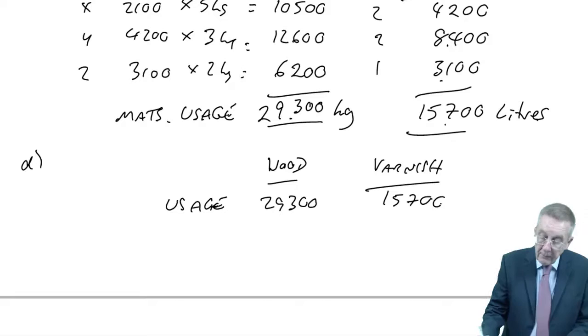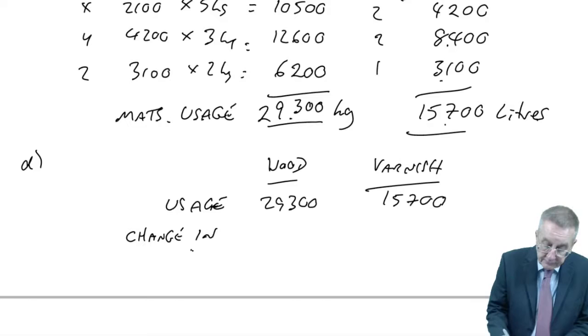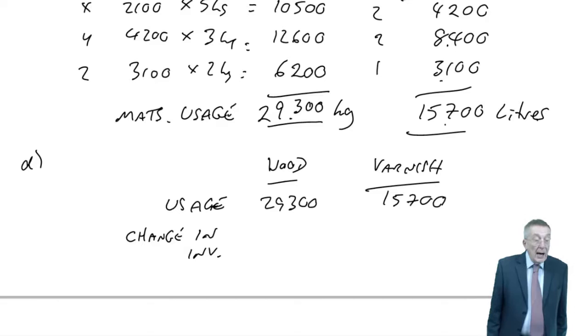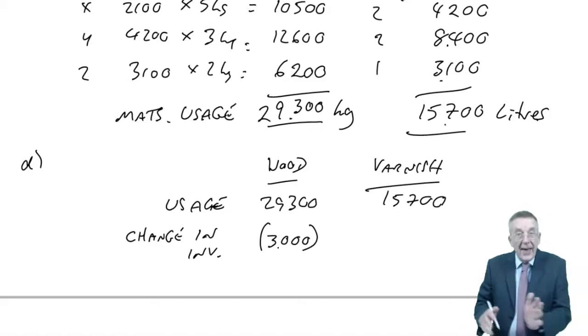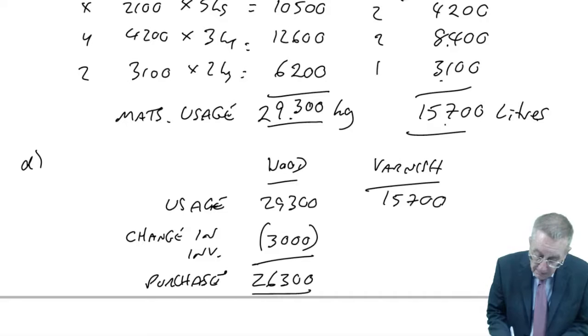We know what we're going to need to use for our production. But I want to know how many we need to buy, and as I just said, it depends on what's happening to the inventory. What about wood? At the moment we've 21,000 kilos, we're going to reduce it by the end of the year to 18,000. Well, we need 29,300 for production. If we're reducing inventories, fine, 3,000 of the inventory can go into production. We only need to buy the remaining 26,300.